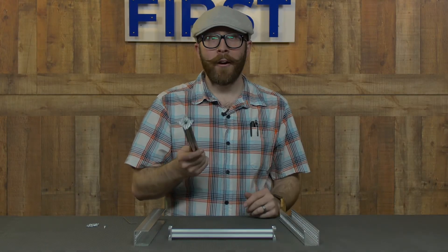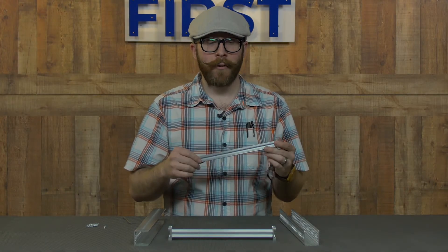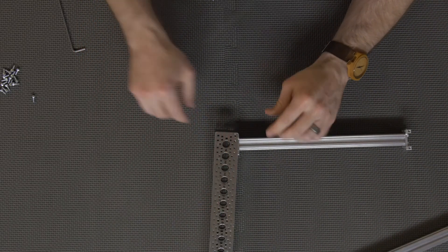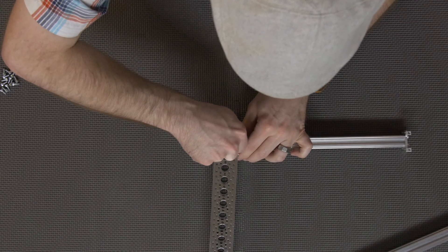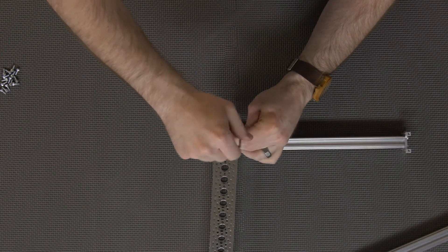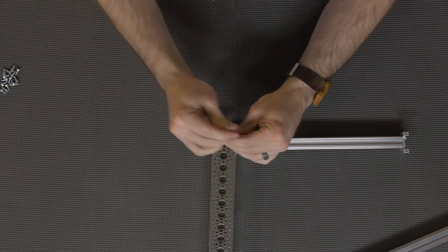Once you have your side tap pattern mounts attached to the end of your X-Rail, we're going to go ahead and bolt them to the inside of your channel. We're using five sixteenths inch screws for this.